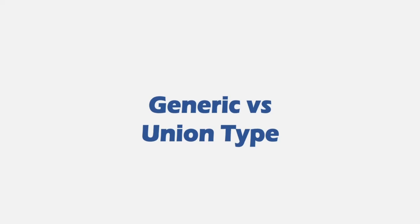We have learned about generic types in great detail. We learned how to create a generic method and a generic class and how to use it in our TypeScript program. Now before we proceed further, let's also try to understand the difference between a generic type and union type, because this might be a little bit confusing for beginners.